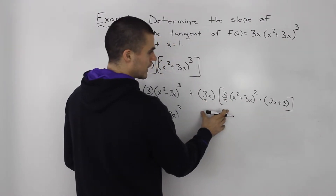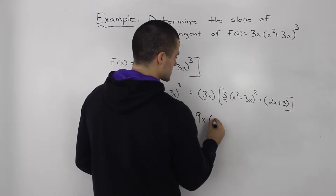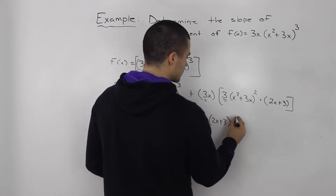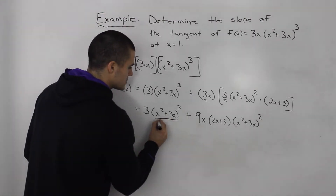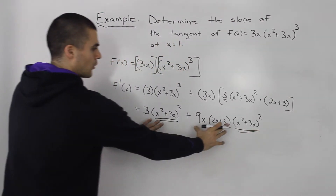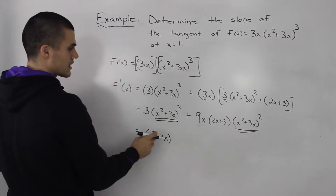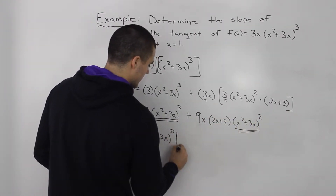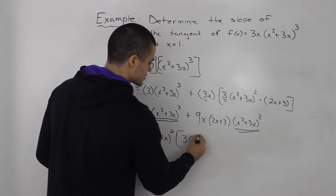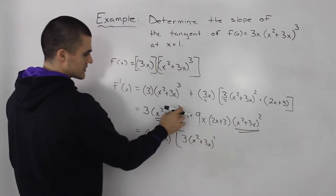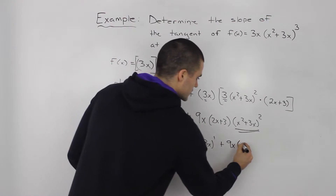Notice how this 3 and this 3 we can multiply together — you want to multiply all of the integers together. So we'll have 9x. Then let's put (2x + 3) in front and rewrite (x² + 3x)². Notice we can factor out (x² + 3x) from both expressions. We factor out the lowest exponent, which is 2. When we factor out (x² + 3x)² from the first part, we're left with 3, and then plus 9x(2x + 3).